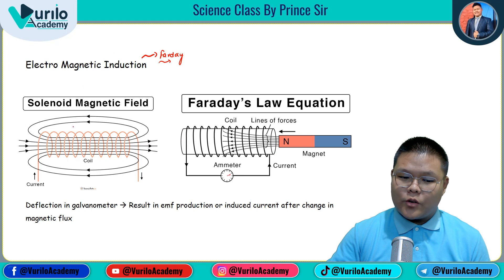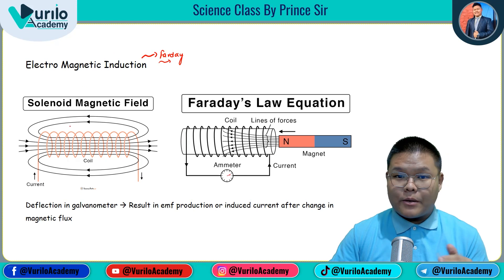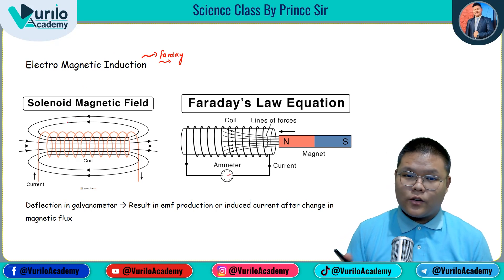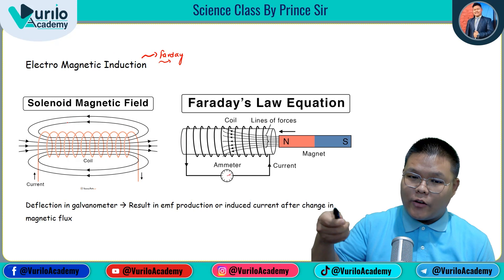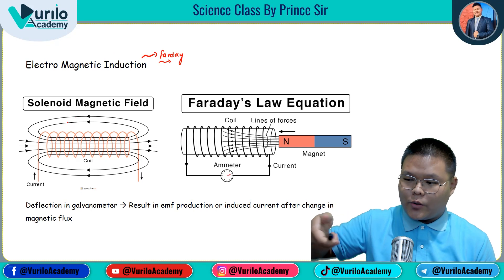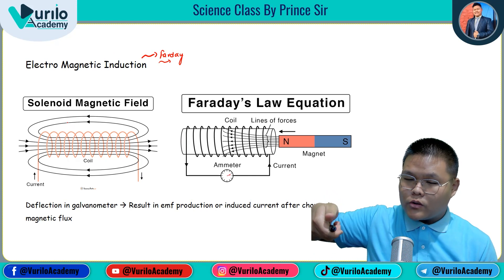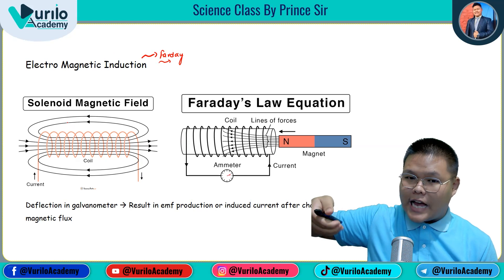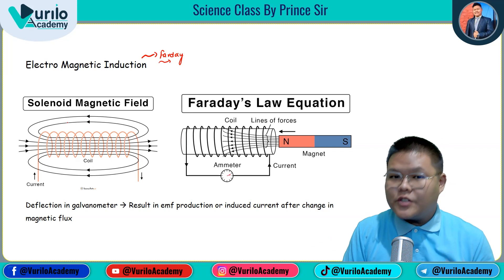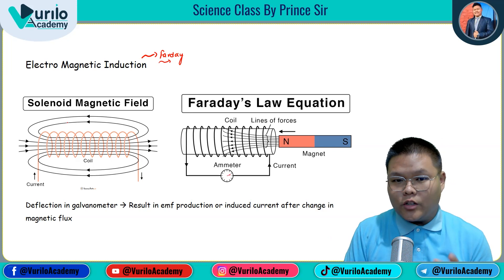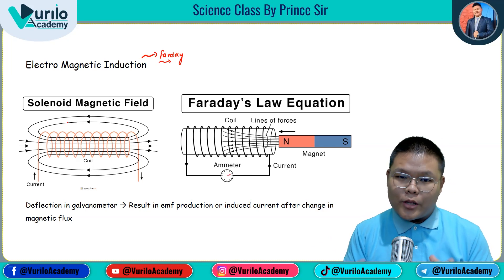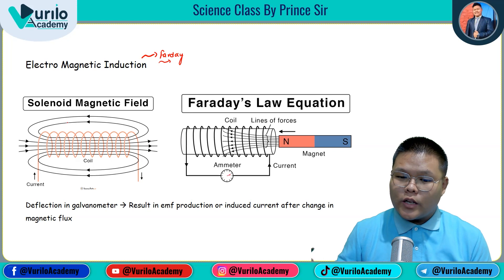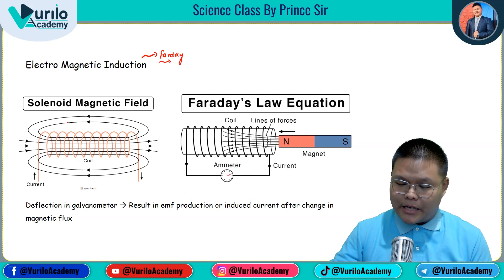Recall the solenoid: when we used the right-hand grip rule, the thumb pointed in the direction of the magnetic field toward the north pole, and the four fingers wrapped around the solenoid showed the direction of current flow. That is how we determined the direction of the magnetic field in the solenoid.